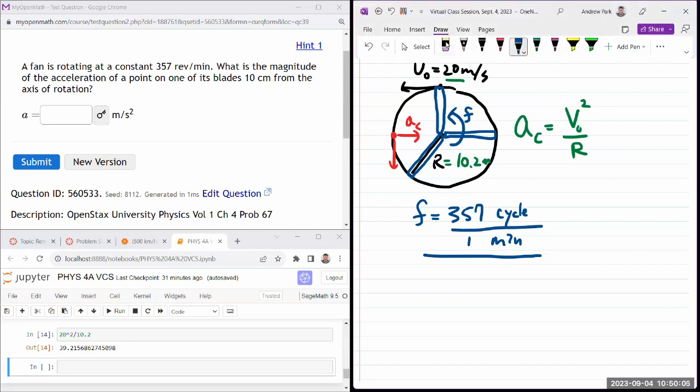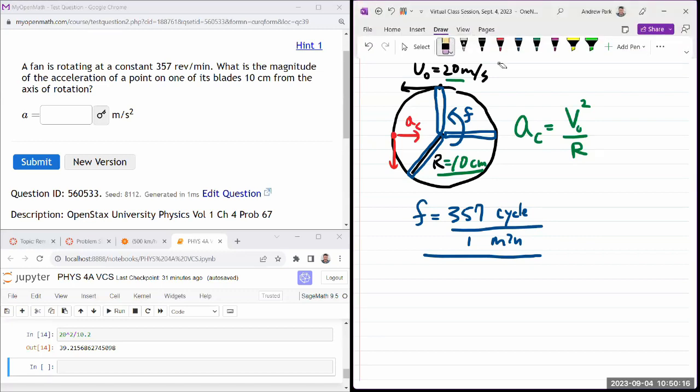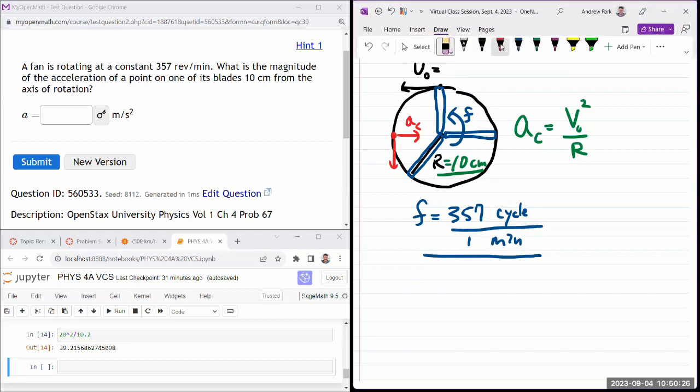They're asking for what is the magnitude of acceleration of a point on one of its blades 10 centimeters from the axis of rotation. In this question, we are not given the velocity of the tip. But if you reason through, you can figure out the velocity of the tip yourself.